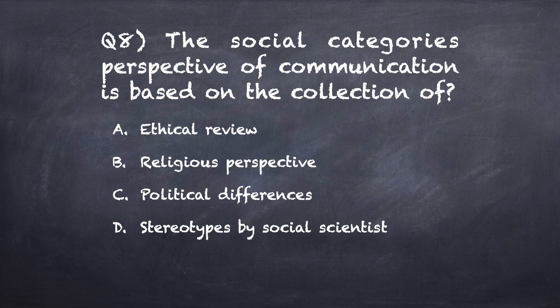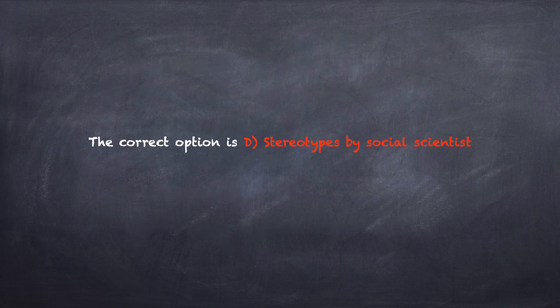Question number eight: The social categories perspective of communication is based on the collection of? Option A: ethical review. Option B: religious perspective. Option C: political differences. Option D: stereotypes by social scientists. The correct option is D, stereotypes by social scientists.